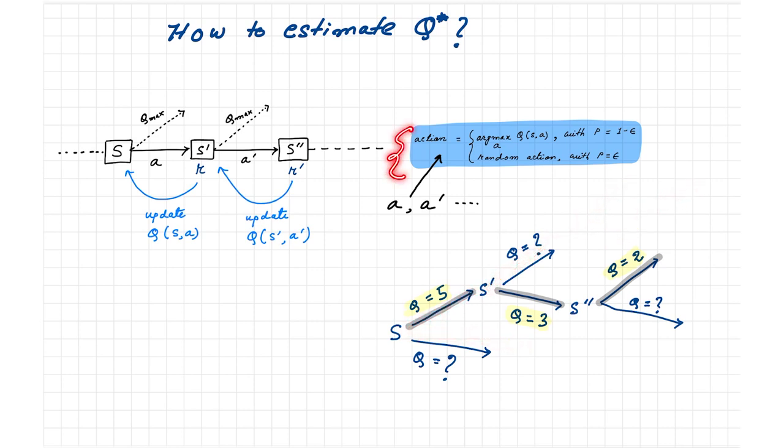For instance, we can use an epsilon greedy policy like this. As you can see, for any state s, this policy will tell the agent to perform mostly the action having maximum Q value as I explained before. But sometimes with a small probability epsilon, it will tell the agent to perform any random action. Because of these random actions, the agent will not execute the same action sequence again and again, because it has to explore all the states and all the actions as widely as possible to estimate the Q values for all the possible state-action pairs.